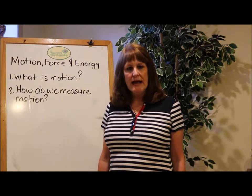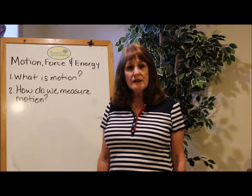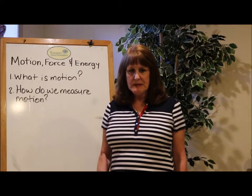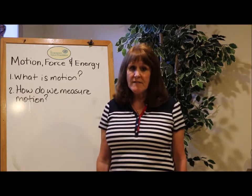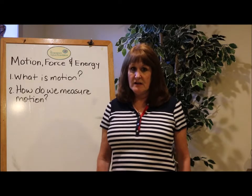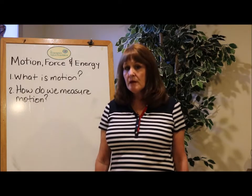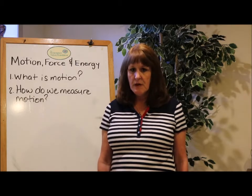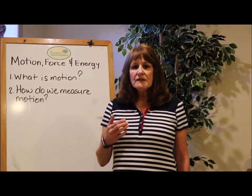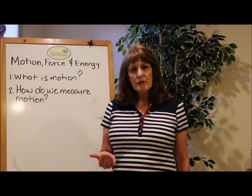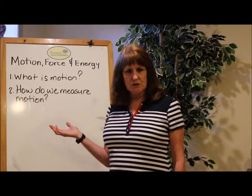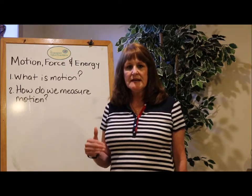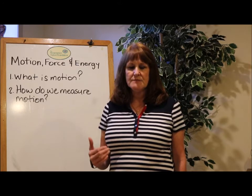What is motion, anyways? Motion is described by an object's direction and speed. Speed, by definition, means how fast an object is actually moving. So when measuring an object's position over time, we can describe its motion. We measure motion by speed — the time it takes an object to travel.